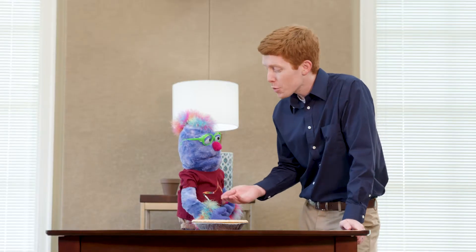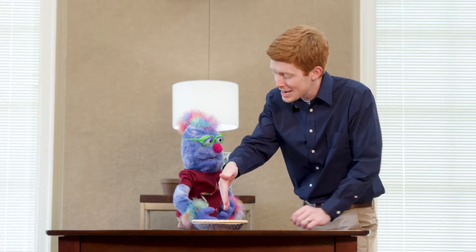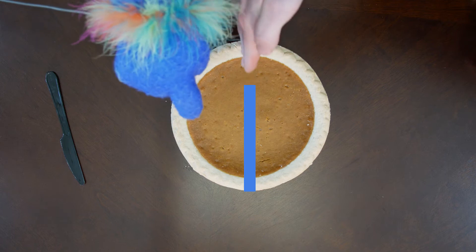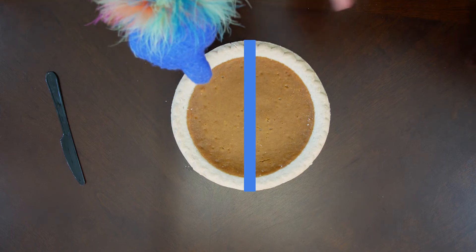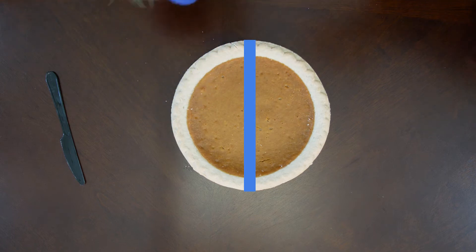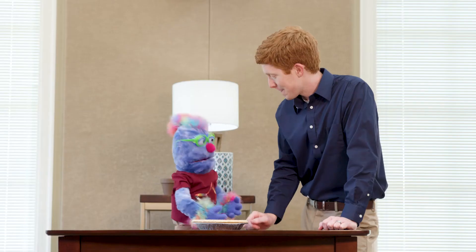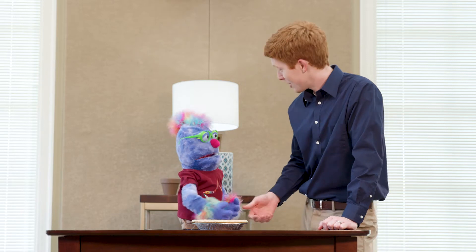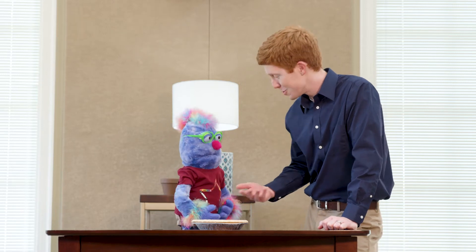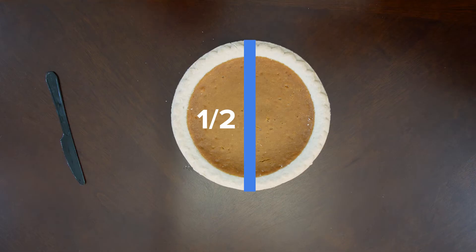So, let's say we cut right down the middle, right here on this line. You see, we would have two pieces. Oh, that's great for sharing. That's right — one for you and one for me. Yum. And we would say that each slice would be one half of the pie, because it's one out of two pieces.